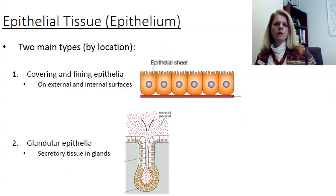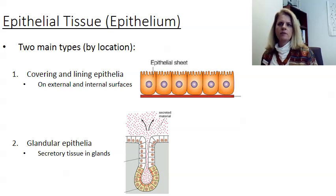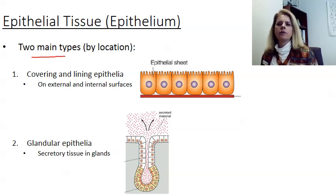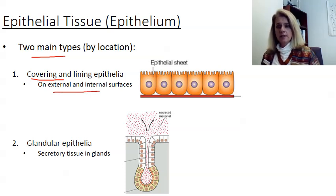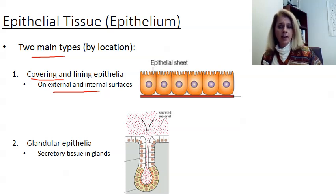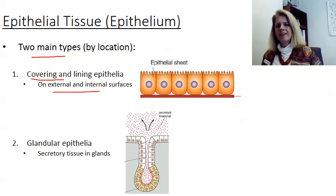When we talk about epithelial tissue, we have two main types of epithelium. The first one is your covering and lining epithelia. These are found on external and internal surfaces. The outside layer of your skin is epithelial tissue, the inside of your mouth is a type of epithelial tissue, and the tissue that lines your intestines is also a type of epithelial tissue. These cover and line things.